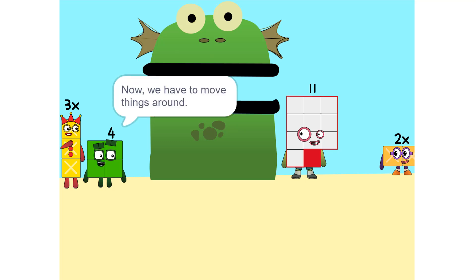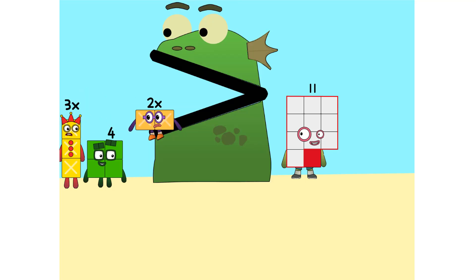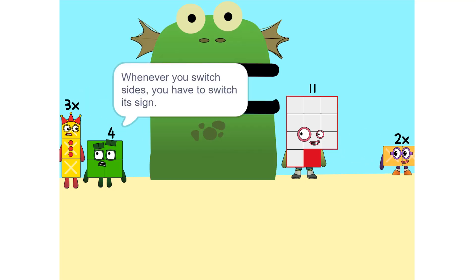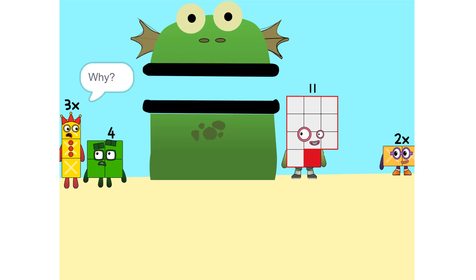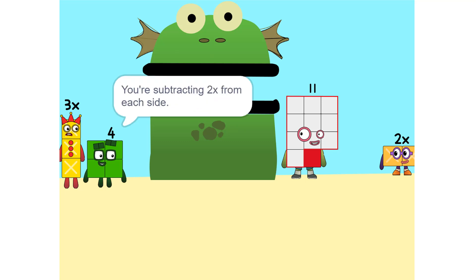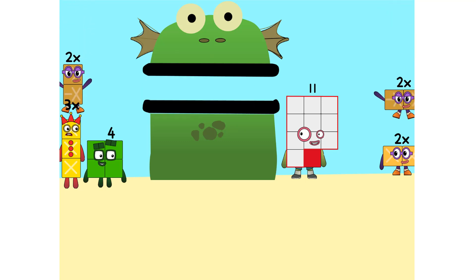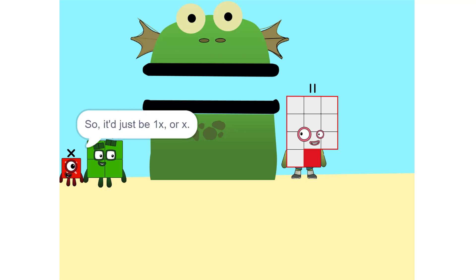Now we have to move things around. We have to move this 2x to this side. Huh? Whenever you switch sides, you have to switch a sign. So if it's positive, it becomes negative and vice versa. Why? Think of it this way: you're subtracting 2x from each side. Oh, so it just be 1x or x. Correct.